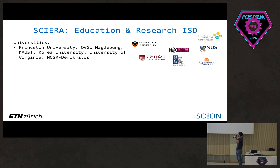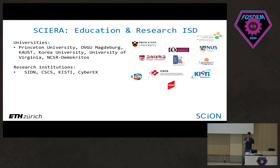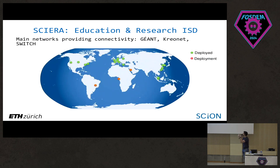One example ISD is the Education and Research ISD, also called SIERA. Here you find universities and other research institutions, as well as research and education networks providing connectivity between those research entities. This is a growing ISD — more universities are interested in joining — and here is a world map showing how they are distributed around the globe.